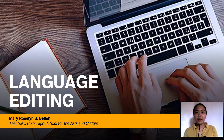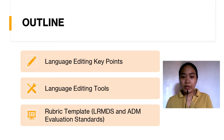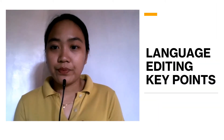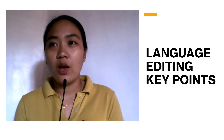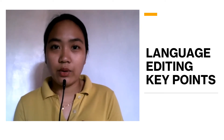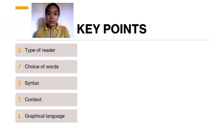I am Mary Rosaline B. Bellien, Teacher 1 from Beagle High School for the Arts and Culture. For this topic, we will be having three subtopics: the language editing key points, language editing tools, and rubric template following the LRMDS and ADM evaluation standards. So let's start with the language editing key points. The key points are: type of reader, choice of words, syntax, context, and graphical language.